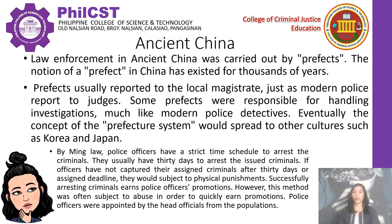Law enforcement in ancient China was also relatively progressive. When minor judicial incidents such as robberies occurred, the client reported to a police officer, also known as a constable. To catch a thief, a constable could arrest another thief by baiting him with a forged opportunity, using the thief's field knowledge to catch the one in question. The assisting thief would still be punished for robbery, but since he assisted the officer, his punishment would be lowered. By Ming Law, police officers had a strict time schedule — usually 30 days — to arrest assigned criminals, otherwise they would be subject to physical punishment. Successfully arresting criminals earned officers promotions, though this method was often subject to abuse.